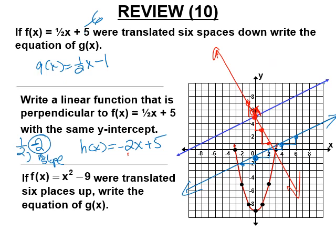If f of x equals x squared minus nine and we translate six places up, we add six to negative nine to get negative three. So g of x equals x squared minus three. It will have a y-intercept at negative three.